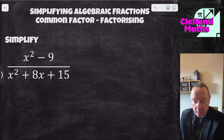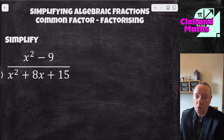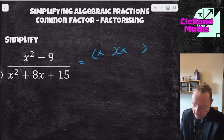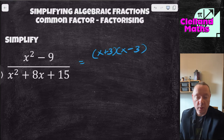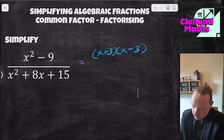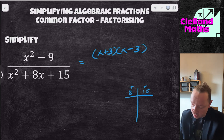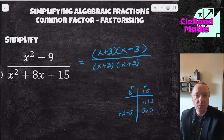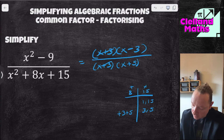Next, factorise the top and bottom then simplify. The top, x² minus 9, is a difference of two squares: (x+3)(x-3). The bottom, x² plus 8x plus 15, is a trinomial — looking for two numbers that multiply to 15 and add to 8. That's 3 and 5. So the bottom is (x+3)(x+5). The (x+3)s cancel, leaving x minus 3 over x plus 5.